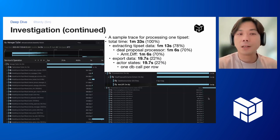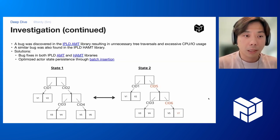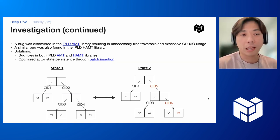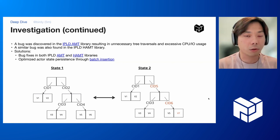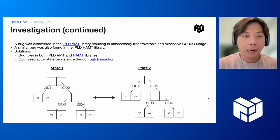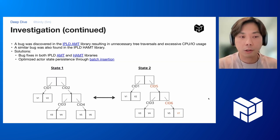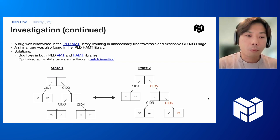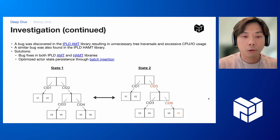In order to understand why amt.diff is so expensive, I reviewed the Go IPLD AMT library and eventually discovered a bug in the library causing unnecessary tree traversal. To explain this, I drew a diagram to demonstrate how we compare two AMT arrays.